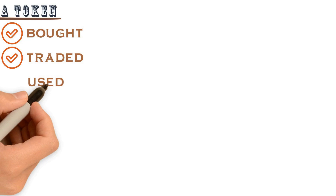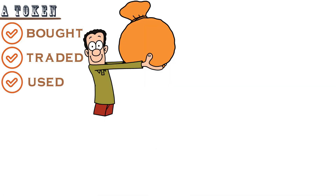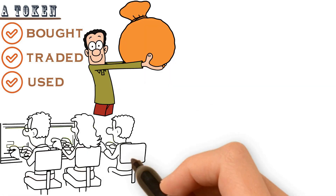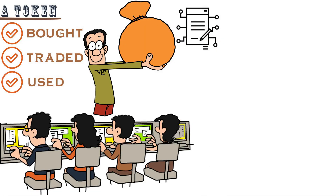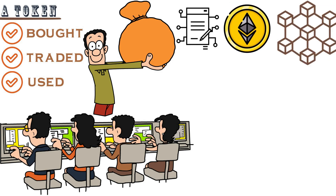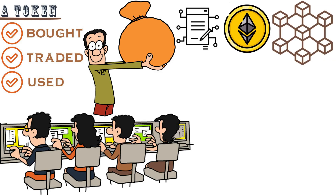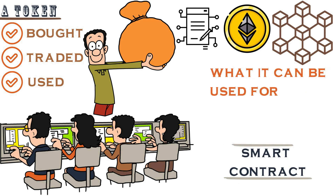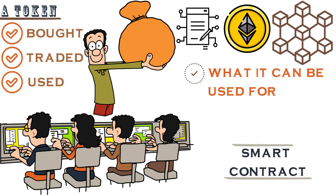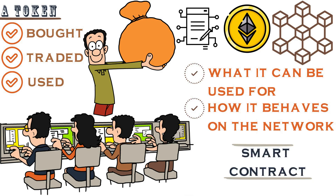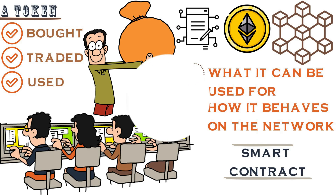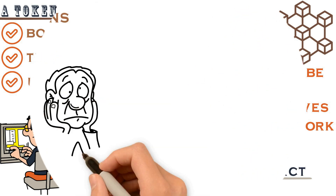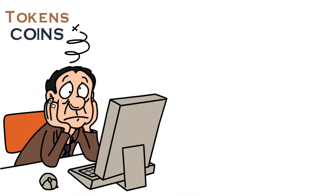This is why the most secure blockchains are those with the most miners. So if you hear about a new coin or token, check to see how many people are mining it before making any investment decision. A token can be bought, traded, and used as a medium of exchange on a blockchain platform. Tokens are created using smart contracts on the Ethereum blockchain, the most common platform used to create tokens. Every token has its own smart contract that dictates what it can be used for and how it behaves on the network.